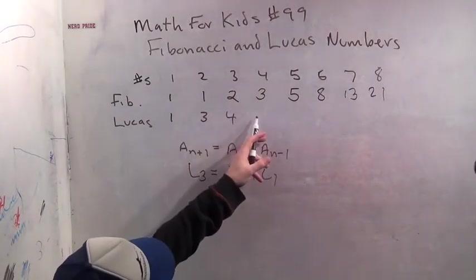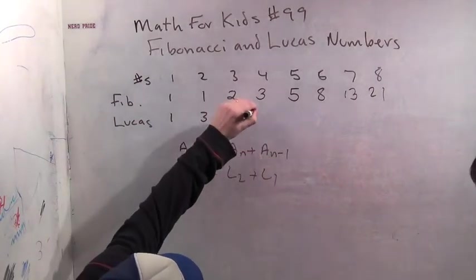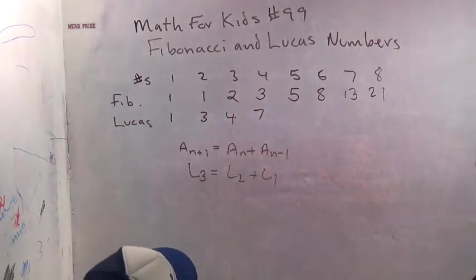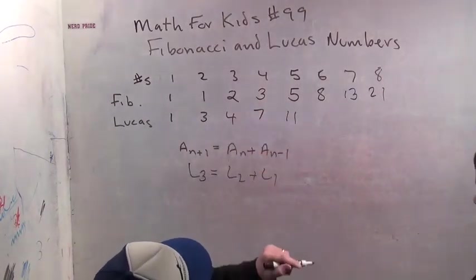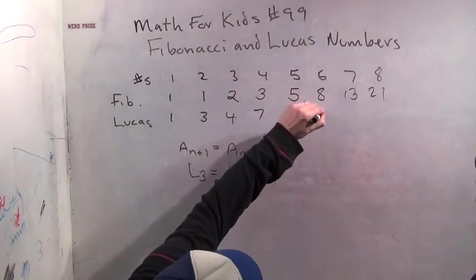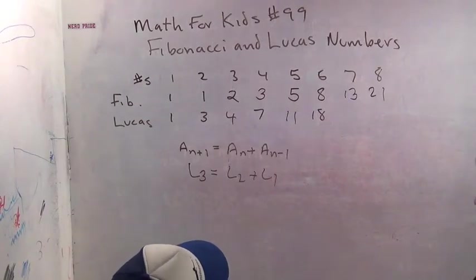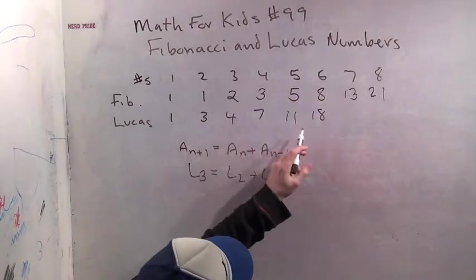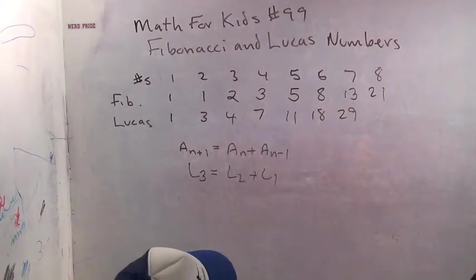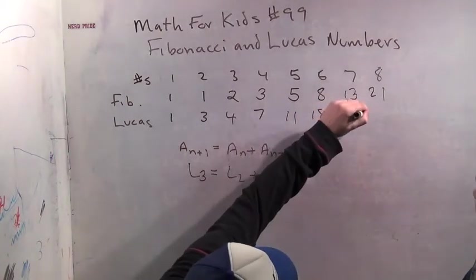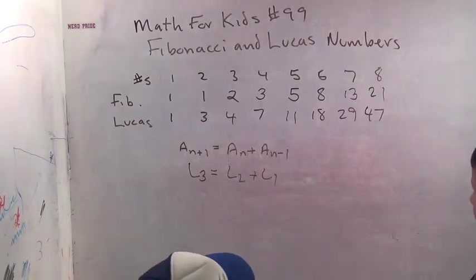What's this one equal to? 7. And then 11. 18. And then 29. These numbers get big fast. Yeah, they do. 29. And then? 47. Awesome.